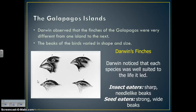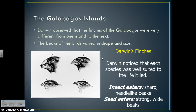We're going to talk about the finches first, since this is the go-to example of evolution in relation to Charles Darwin. He observed that the finches of the Galapagos Islands were very different from one island to the next — some had big broad beaks, some had short beaks, some had needle beaks. He noticed that each species of bird's beak was well-suited or well-adapted to the food source available to them.